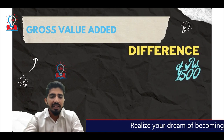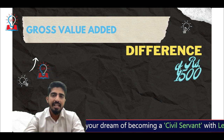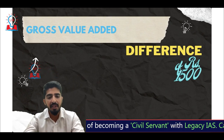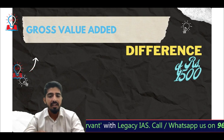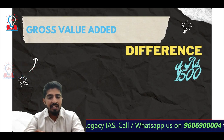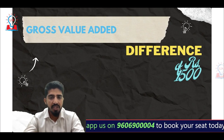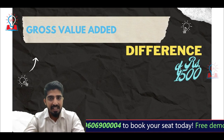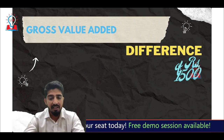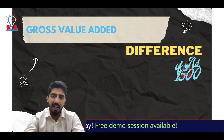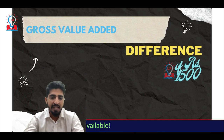The difference between the two comes out to be 1,500 rupees. There are two key differences between GDP and GVA: first, GDP is about the consumer side while GVA is about the producer side; second, GDP includes net taxes whereas GVA does not include net taxes. Those are the two differences between GDP and GVA.